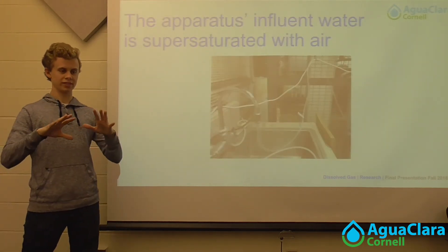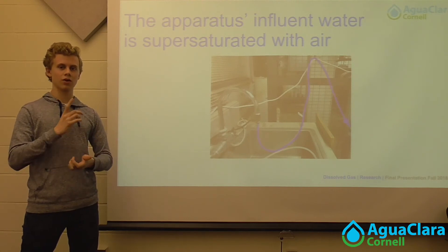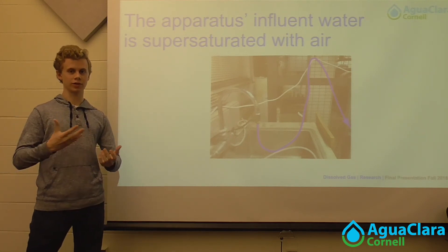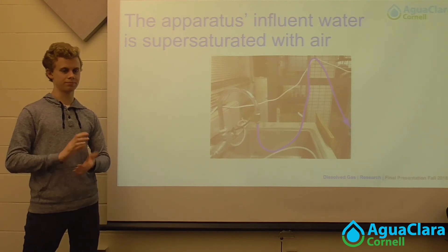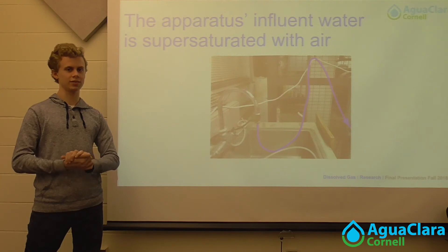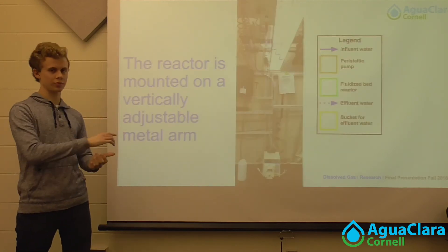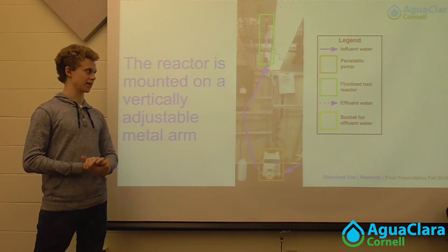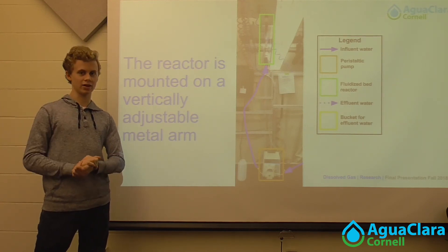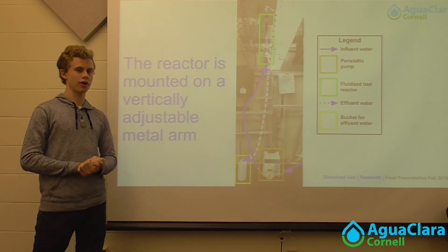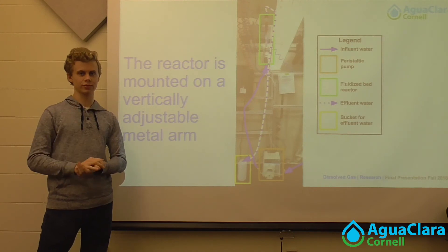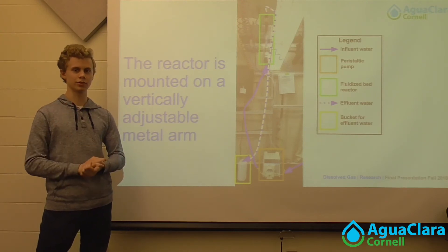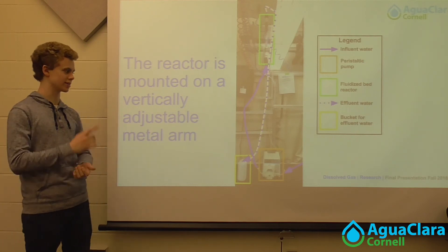Now that we've talked about the reactor itself, let's talk about the system. We are drawing in water from a sink. As Kara and Isaac touched upon, the water is heated and super saturated — there is a source linked in the notes on this slide. The water comes in, goes through a peristaltic pump, and then the peristaltic pump directs the water up and into the reactor. The reactor is mounted on a vertically adjustable metal beam, as Kara mentioned, and the velocity of the water in the reactor is at minimum the fluidization velocity of the sand bed. The water will then exit the reactor via effluent tubing and flow down into the bucket. That's the current apparatus setup that we have.